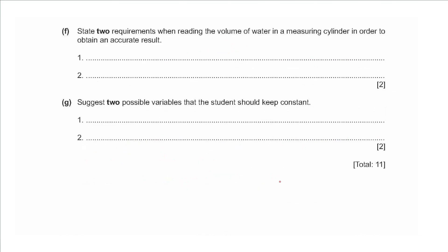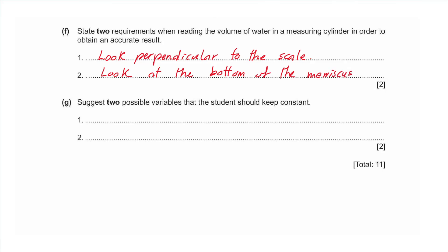Part F: state two requirements when reading the volume in a measuring cylinder. We say: look perpendicular to the scale, and look at the bottom of the meniscus. Part G: suggest two variables the student should keep constant — keep the room temperature the same, and keep the volume of liquid the same.